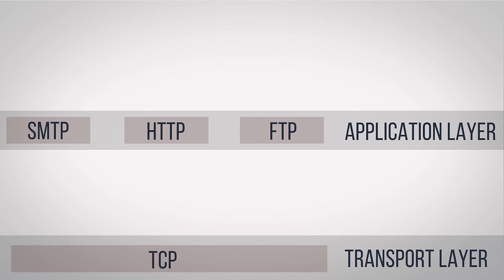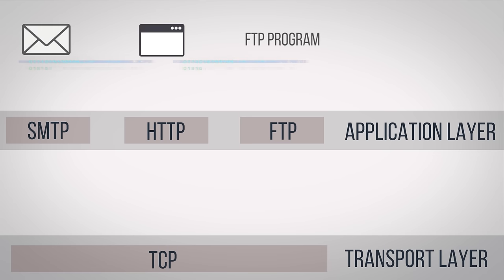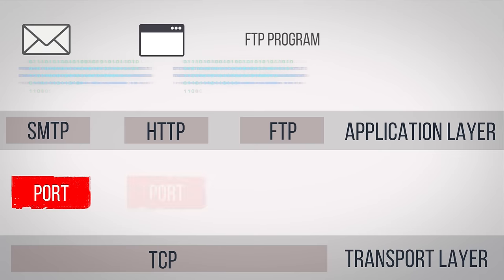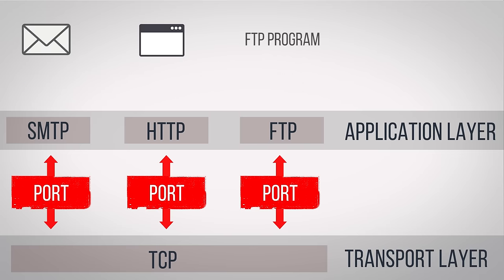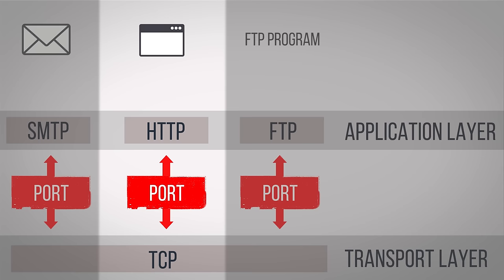After the Application Layer gets the data from whatever program you're using, it talks to the Transport Layer through something called a port. Each port can be assigned to a different protocol in the Application Layer so that TCP knows where the data's coming from. For example, most activity in your web browser will go through port 80, which is what HTTP always uses.